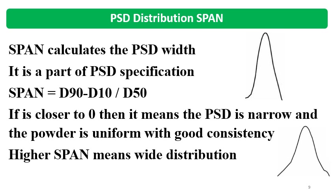Span is also calculated and is part of the particle size distribution specification. The specific surface area may also be given for critical materials as part of the specification. Span is a calculated value: it is (D90 minus D10) divided by D50. If the span is closer to 0, that means the PSD is narrow and the powder is uniform, having good consistency. If the span value is higher, there is a wide distribution.